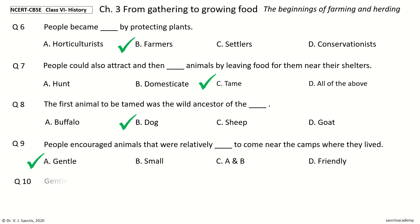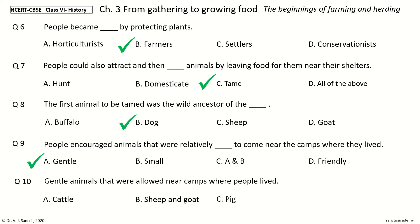Question 10. Gentle animals that were allowed near camps where people lived. The options are: cattle; sheep and goat; pig; all of the above. And the answer is all of the above.